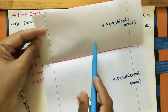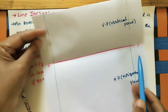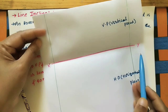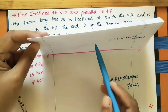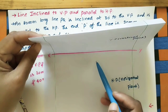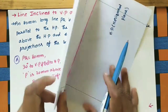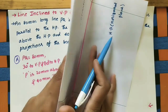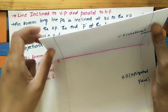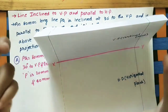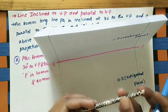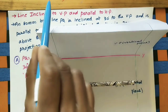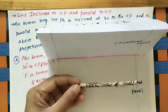The line joining both the vertical plane and horizontal plane is the XY line, also called the reference line. The angle between the vertical plane and horizontal plane is 90 degrees, making the first quadrant. The line is inclined to VP.